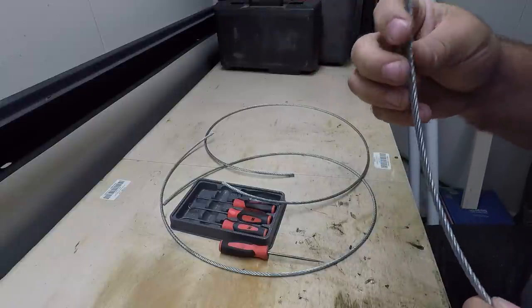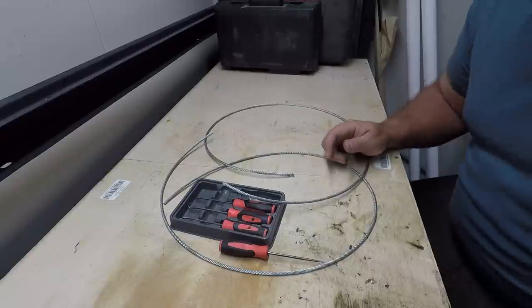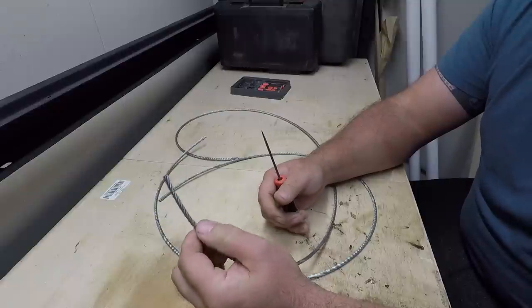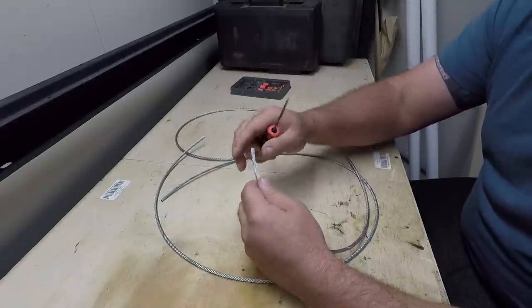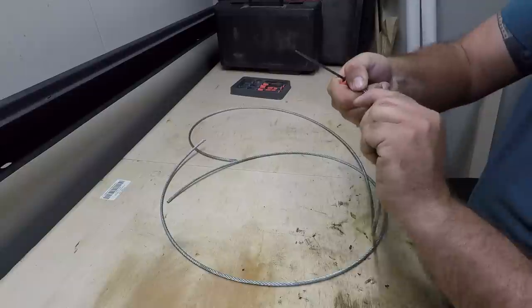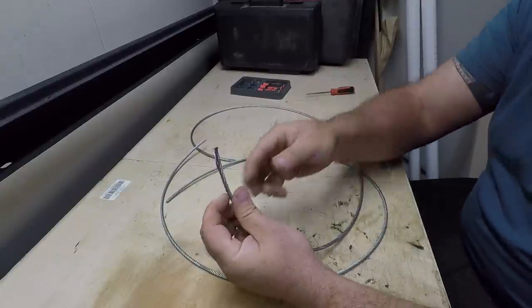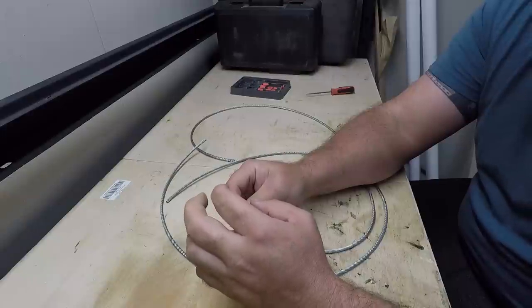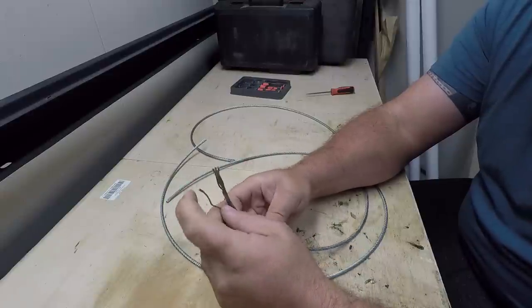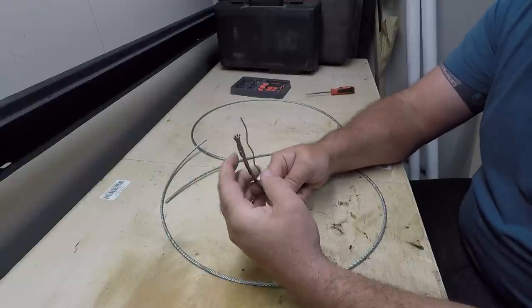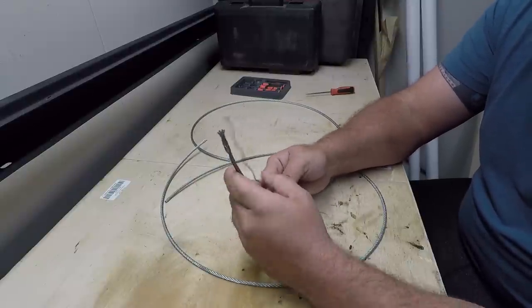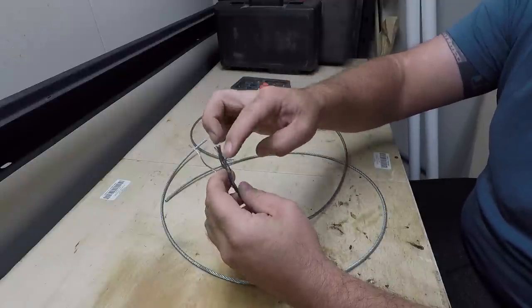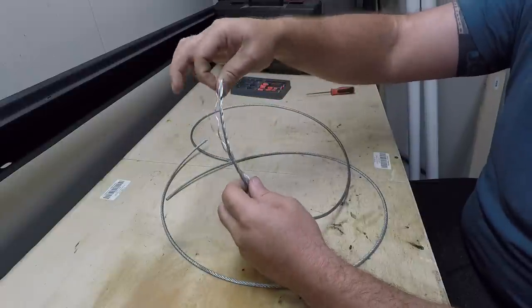Now onto the fun stuff. We're just gonna use a pick to pop some of this open. Typically you can just twist it, the small stuff. Once you get it started it comes right open. But the goal here is to not separate the individual wires from the strand. We just want to separate the strands off of the core. You can do this one at a time, you can do this two or three at a time, whatever. It'll come apart pretty easily.